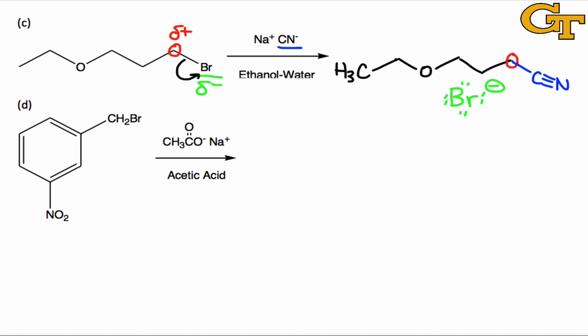One last example to drive these ideas home, Br serves as the leaving group, the carbon that it's bonded to is the electrophile, and here the nucleophile is the negatively charged component of this salt, or the acetate ion. The atom bearing the formal negative charge in this case is oxygen, but in fact you may have noticed that both of these oxygens share the negative charge, and we can use resonance structures to illustrate that.